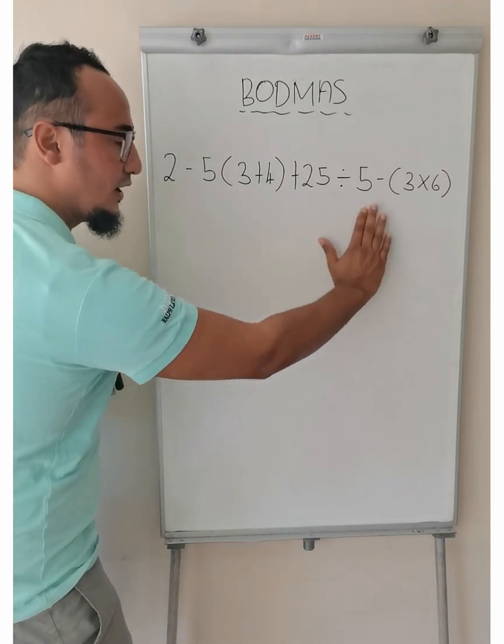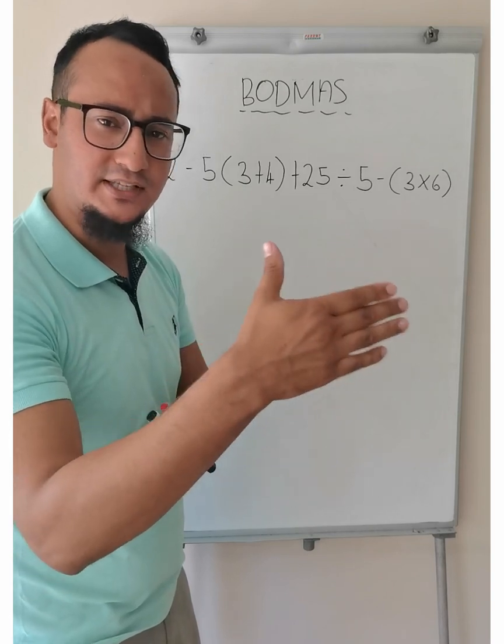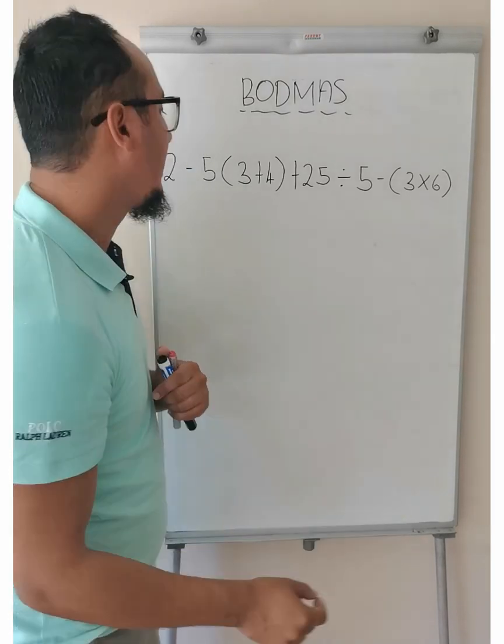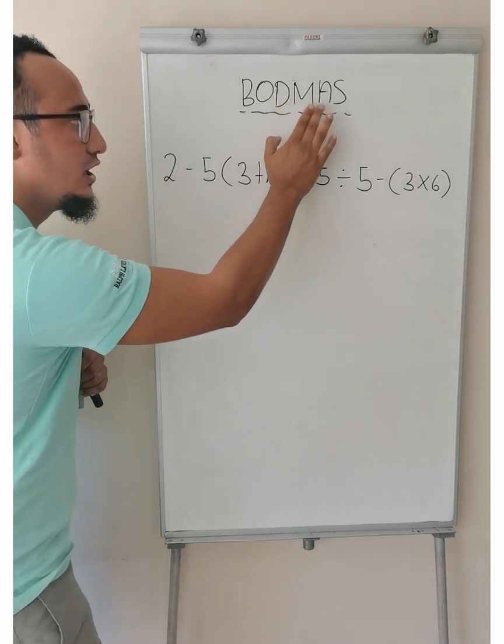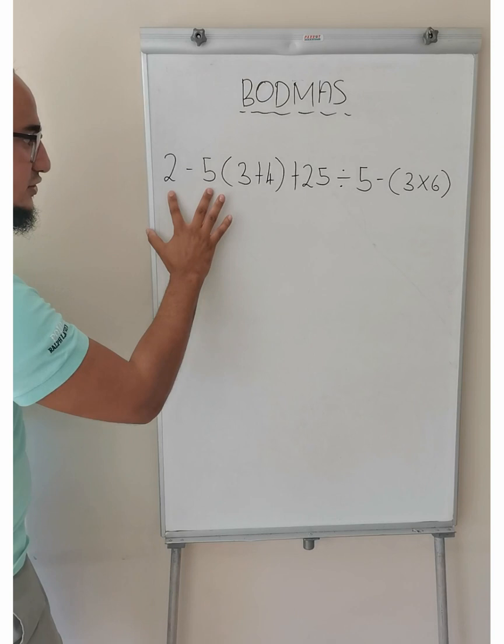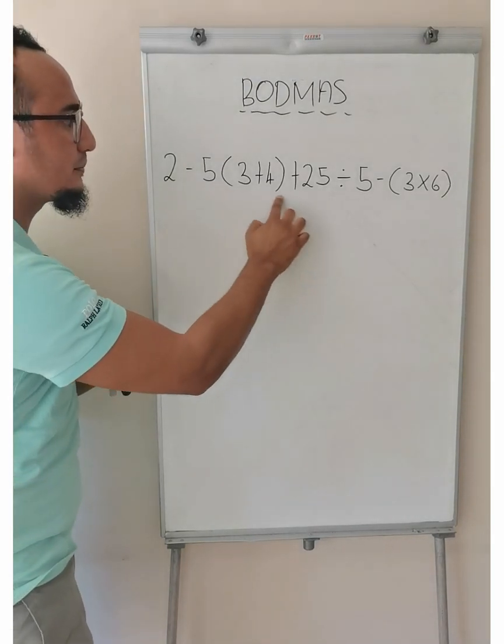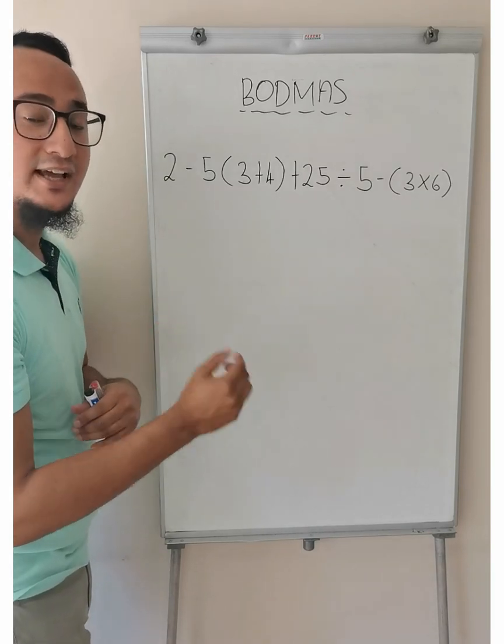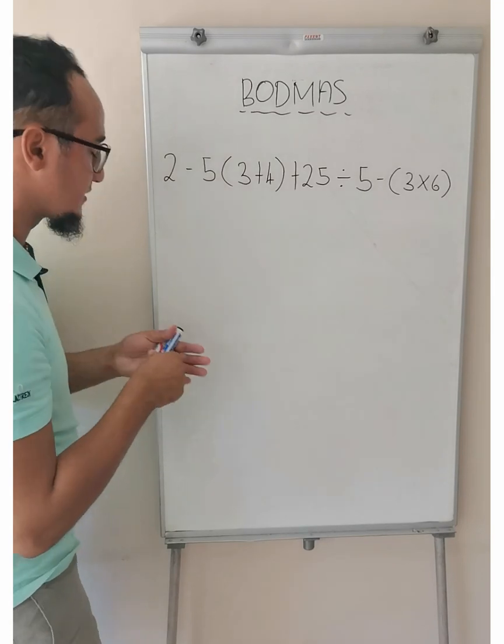Over here, I have a sum. Whenever I see more than one sign, sign or operation, in other words, plus, minus, multiply or division, I need to follow the order of division and multiplication before I plus and minus. So, of this 2 over here, do I first say 2 minus 5 or do I first multiply out or work with the brackets? The thing is, what does Bodmas say?